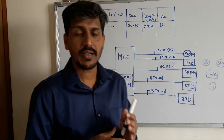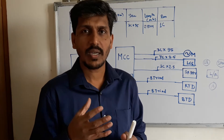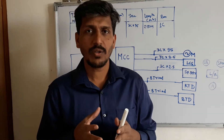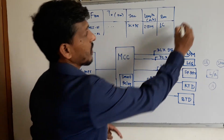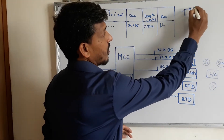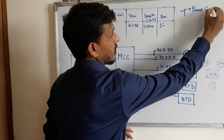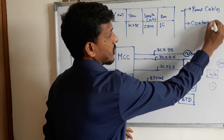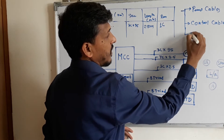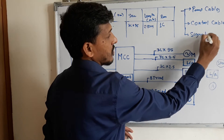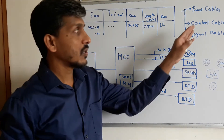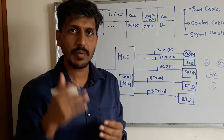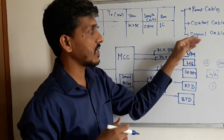Once we do cable sizing calculations, we can make this document. A cable schedule is essentially a schedule — a list of cables — consisting of your power cables, control cables, and signal cables.